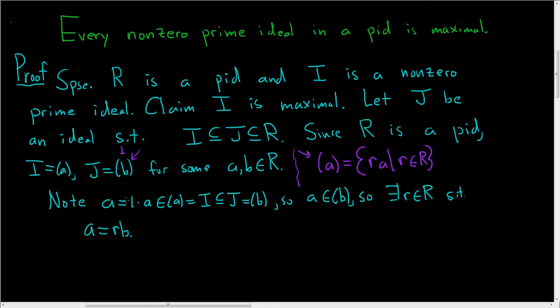So note, a, which is equal to rb, is in I, which is the ideal generated by a. And this ideal is prime. Hence, what does that mean? That means that r is in the ideal generated by a, which I'll go back to calling I, or b is in I. One of the two is going to happen. So let's take cases.